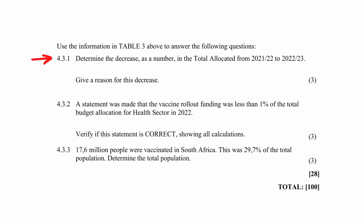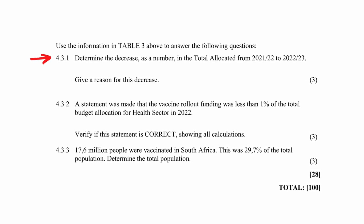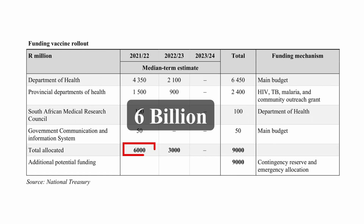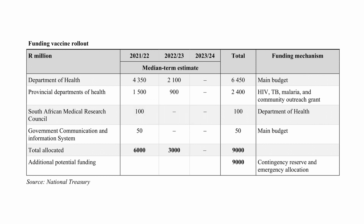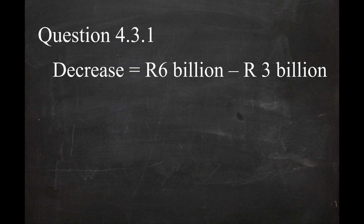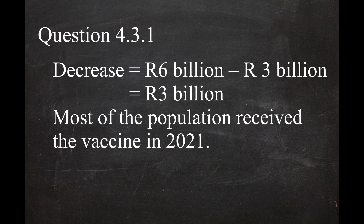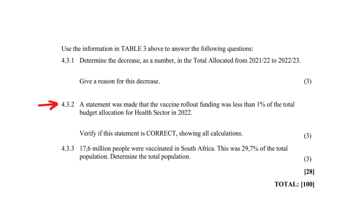In question 4.3.1, you have to calculate the decrease as a number in the total allocated budget from 2021 to 2022, then give a reason for this decrease from the table. The total allocated budget for 2021 is given as 6 billion rand and for 2022 as 3 billion rand. Remember that the values in this table are in millions. The difference between 6 billion rand and 3 billion rand is 3 billion rand. A possible reason is that most of the population received the vaccine in 2021 already.